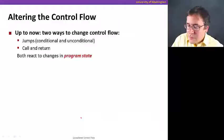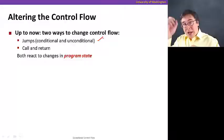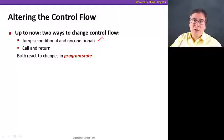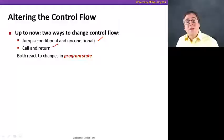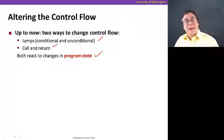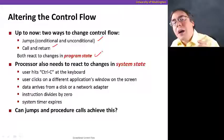So how do we change the control flow? Up to now we saw two ways. First, we saw jumps — when we saw assembly programming, there were jump instructions that change the control flow. We used that to implement things like loops, conditionals like if-then-else, et cetera. We also saw call and return, which is used to implement procedure calls. Both of these changes of control flow react to program state — they're part of your program.